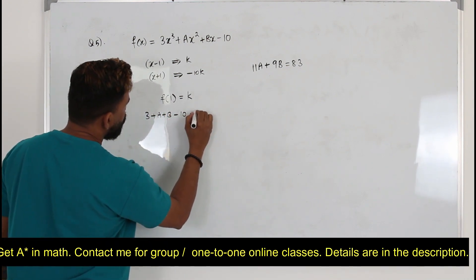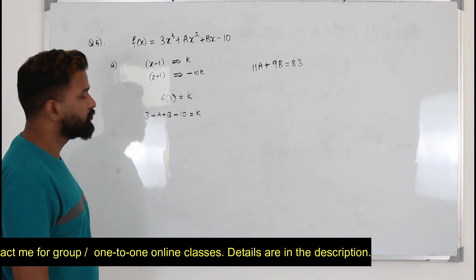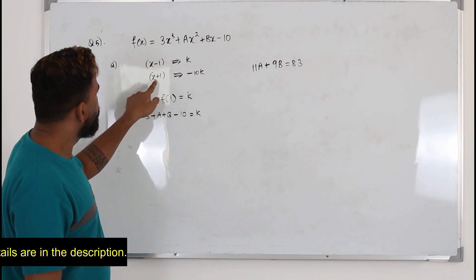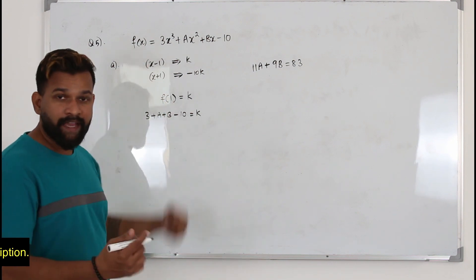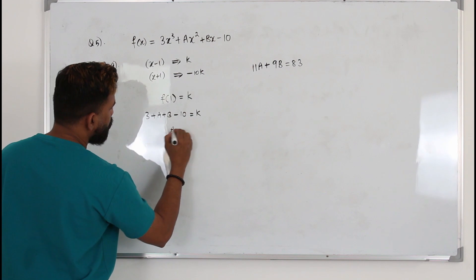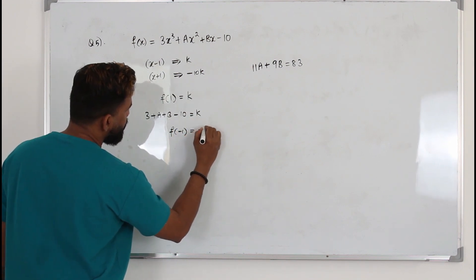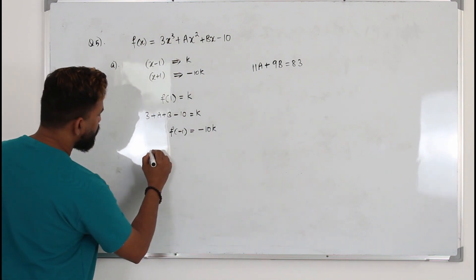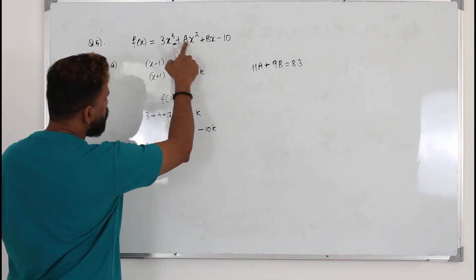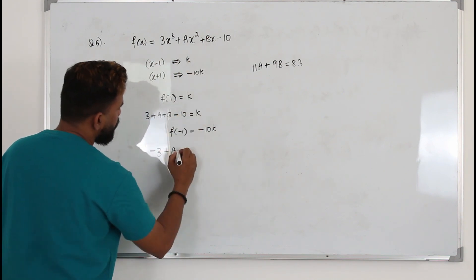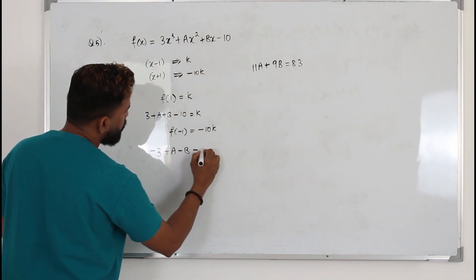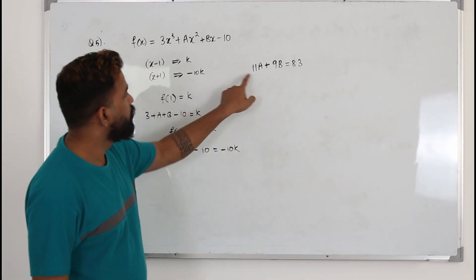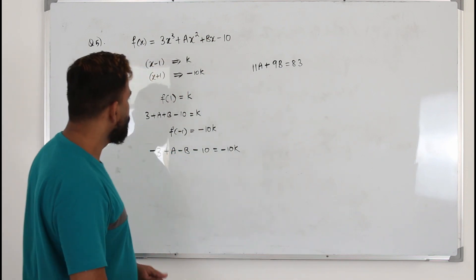Using the second condition: when divided by x + 1, you replace x by -1, so f(-1) = -10k. Replacing x by -1: (-1)³ = -1, (-1)² = +1, then -b - 10 = -10k. So frame this second equation using that substitution.